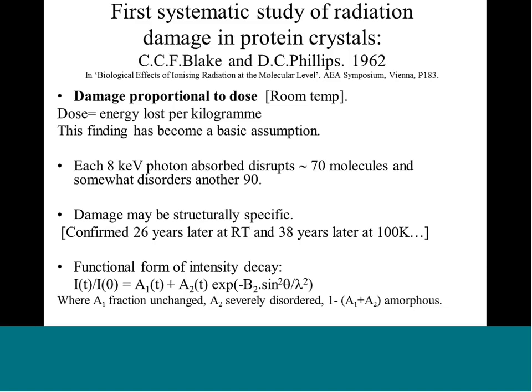They came up with the idea that the functional form of this intensity decay didn't fit a simple exponential. There needed to be a fraction that was unchanged — the A1 term at the beginning, which is time dependent — and then the fraction that's severely disordered, and the rest becomes completely amorphous. The proportion representing the whole minus A1 minus A2 will be completely useless in terms of ordered material and will not diffract anymore. This just shows their experiment.